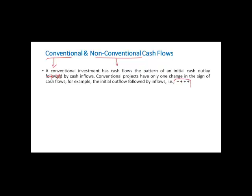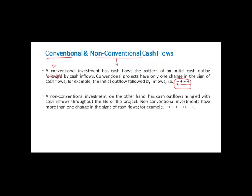This negative means your cash outflow. If you move for 3 years and all the 3 years you are getting positive return, this is known as conventional. Non-conventional is something like this: first year there is cash outflow, then there is 3 year cash inflow, again there is cash outflow, again 2 year inflow and so on. These are known as non-conventional cash flows.